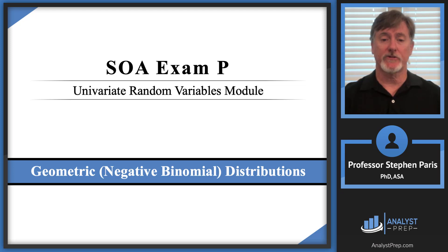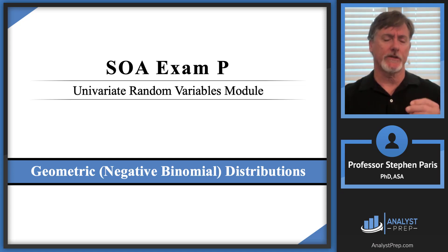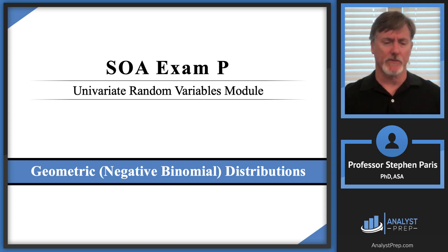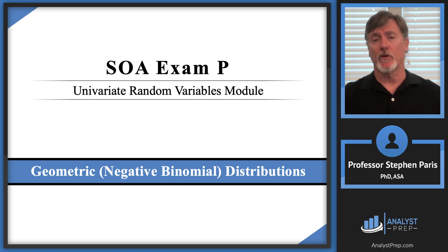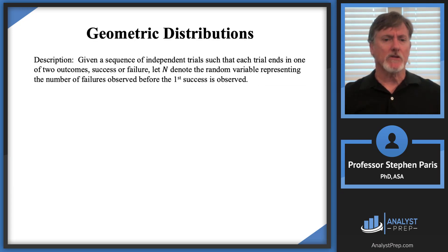In this video we're going to look at the geometric distribution, and a generalization of the geometric distribution is going to be the negative binomial distribution. In a previous video we looked at binomial distributions and then we tweaked the binomial distribution to get some other distributions, namely the multinomial and hypergeometric. With the binomial distribution we were in the context of having independent trials with each trial ending in either a success or failure. With the geometric distribution we're going to be in that same situation.